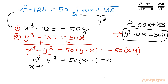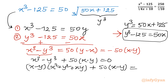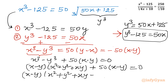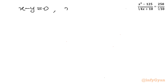Taking all terms to one side and applying the a³ - b³ formula: x³ - y³ + 50(x - y) = 0, which factors as (x - y)(x² + y² + xy + 50) = 0. So either x − y = 0 or x² + y² + xy + 50 = 0.